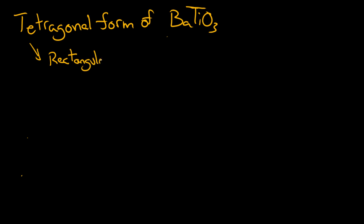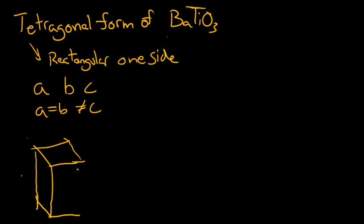What is tetragonal? Tetragonal is kind of like rectangular on one side. The different lengths of the unit cell A, B, and C: in this case A equals B, which is not equal to C. C is going to be the long side. This is extremely exaggerated because the ratio of C to A equals 1.01. This length C is 1% longer.